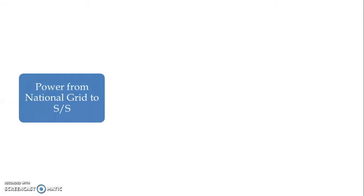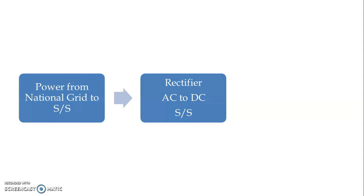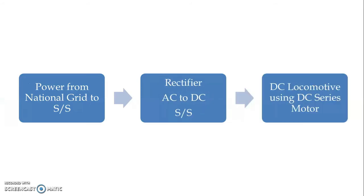Now let us see the general arrangement of the DC system through a block diagram. We receive power from the national grid to substations. In the case of the DC system, we use rectifier-type substations, or AC to DC converting substations. Then we have the DC locomotive and we use DC series motor to get the motive power.